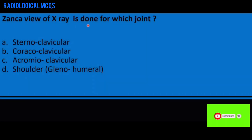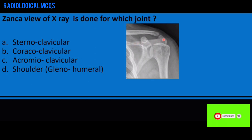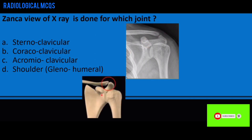The Zanka view X-ray is done for which joint? Around the shoulder we have various joints. This is the humerus, this is the glenoid, so this becomes the shoulder joint or the glenohumeral joint. This process of the scapula is the acromion process and it articulates with the clavicle, making the acromioclavicular joint. This process of the scapula is the coracoid process.